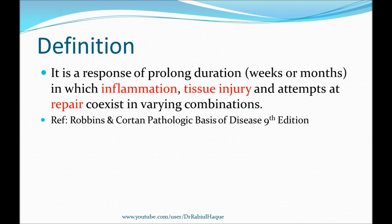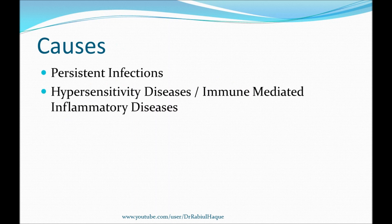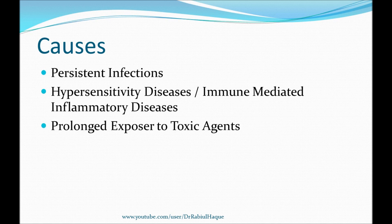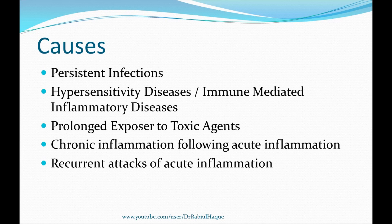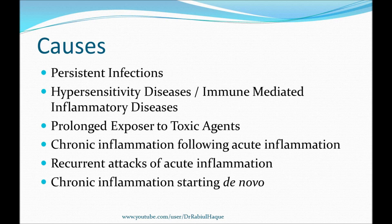Now that we have defined chronic inflammation, we will move on and discuss the common causes. Chronic inflammation can happen from a variety of causes. They include persistent infection, hypersensitivity diseases, or immune-mediated inflammatory diseases. Chronic inflammation can also happen due to prolonged exposure to potentially toxic agents, following acute inflammation — especially recurrent acute inflammation — and also some chronic inflammations will happen de novo.